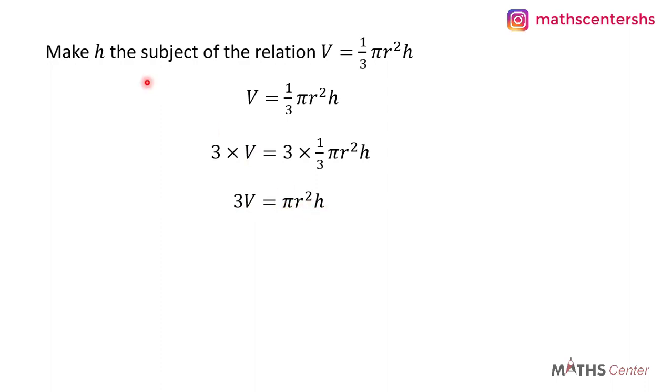We want to make h the subject, so I'll divide both sides by πr². When we do that, πr² and πr² will cancel each other out.